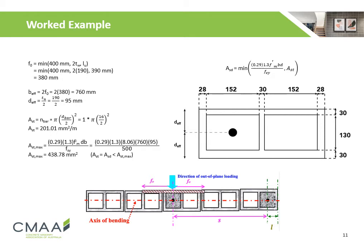F0 is the flange outstand, provided by the reinforcement. It is taken as the minimum of 400 mm, 2 times the thickness of the unit, or the length of the unit. Here, 2 times the thickness of the unit is used, and the flange outstand is calculated to be 380 mm. The effective depth is half the thickness of the unit, as the bar is centrally located in the core, which is calculated to be 95 mm.